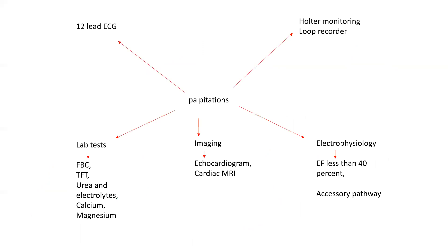Additional tests include blood tests such as full blood count looking for anemia, inflammatory markers, and electrolytes — especially potassium, calcium, and magnesium — as well as thyroid function tests checking for hyper- or hypothyroidism. If structural cardiac lesions are suspected, you may need an echocardiogram or in some cases a cardiac MRI. If a patient has accessory pathway-related tachyarrhythmia, they may need an electrophysiology study, especially if ablation of the accessory pathway is being considered as a treatment option. In patients with VT and poor left ventricular systolic function, particularly if ejection fraction is less than 40%, an electrophysiology study can be performed to see if those ventricular tachycardias are inducible, and if they are, the patient may be a candidate for an implantable cardioverter defibrillator.